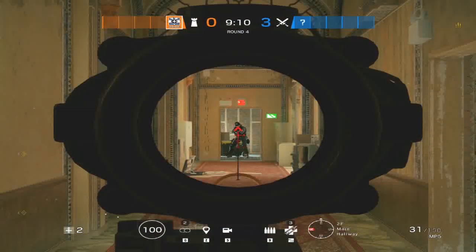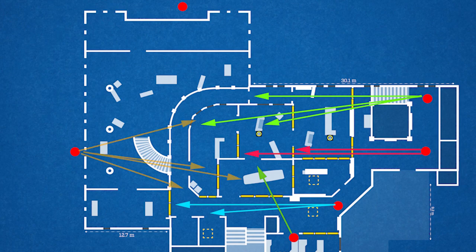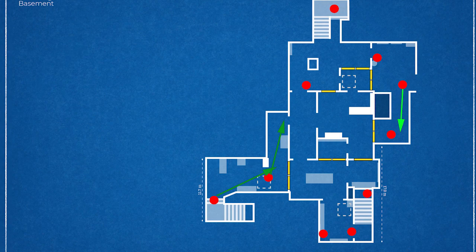Now let's talk about ACOG. The most important factor when choosing between 2.5x sights like ACOG and 1x sights is the range of gunfights, which is determined by the map layout and the site you are attacking or defending. For example, on site CEO and Lounge in the map Bank, most gunfights are at long range, so bringing ACOG is the better choice. But on maps like Oregon on the Laundry and Supply site, you are mostly taking medium-range gunfights, so it's better to bring 1x sights.